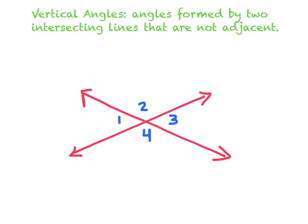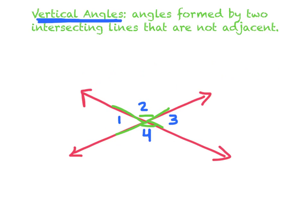Another type of angle we learned about in 7th grade were vertical angles. These are angles formed by two intersecting lines that are not adjacent. You can see two lines intersecting, and vertical angles are the two angles that aren't connected to each other. Angle 2 and angle 3 are adjacent — they're connected. But angle 2 and angle 4 are not adjacent, so angle 2 and angle 4 are called vertical angles.